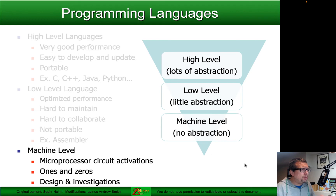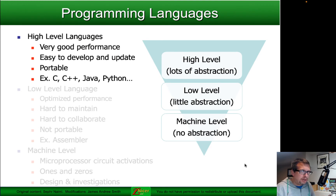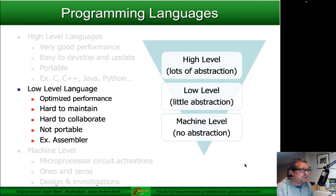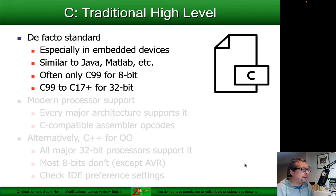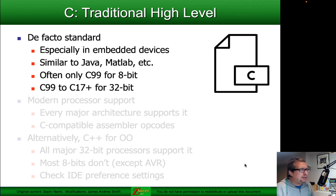When you're talking about microprocessor programming, generally you're working at the high level. Sometimes you get down to the low level and add in assembler operations. And sometimes when you get into the really deep details, you get into the machine level. When we're talking about microprocessor programming, we're typically talking about programming in C. This is the traditional high-level language that's used — it's the de facto standard, especially in the embedded device space.